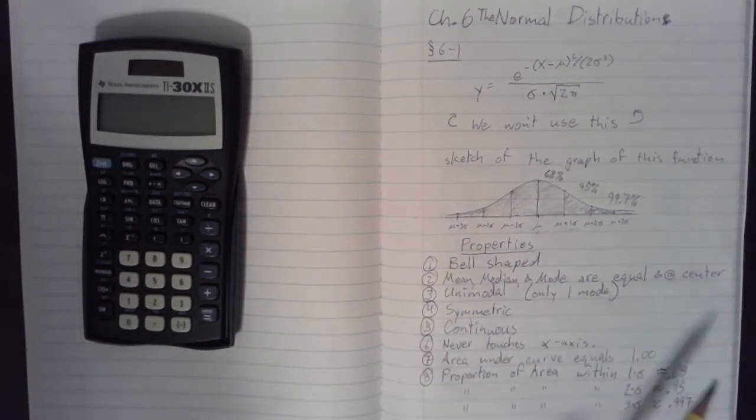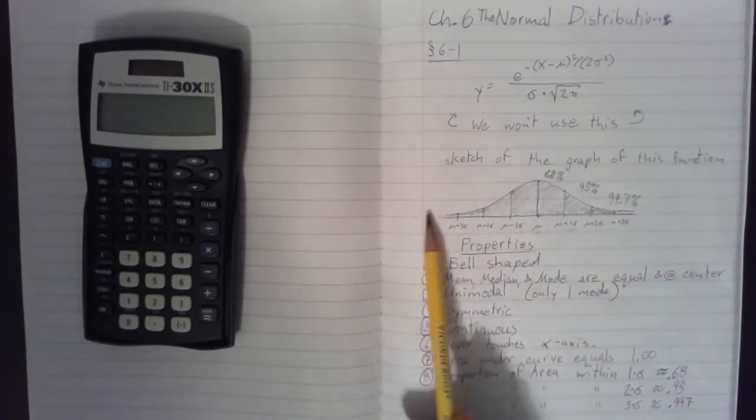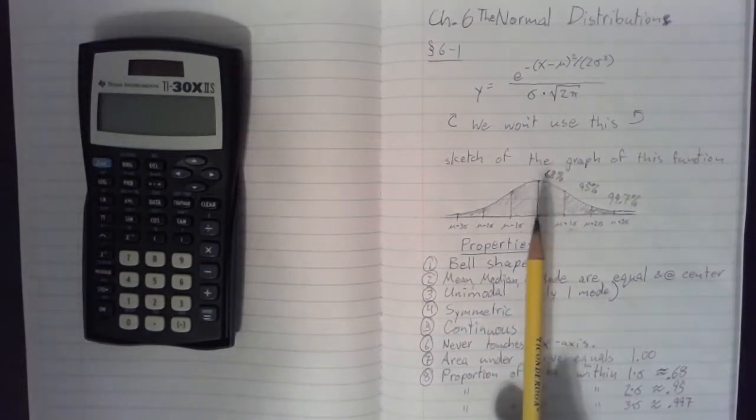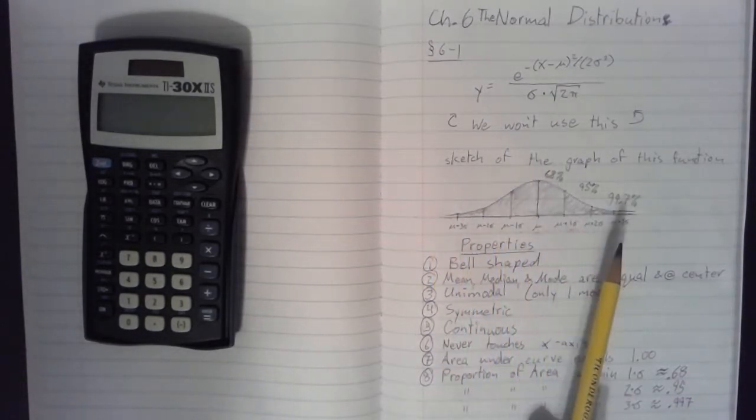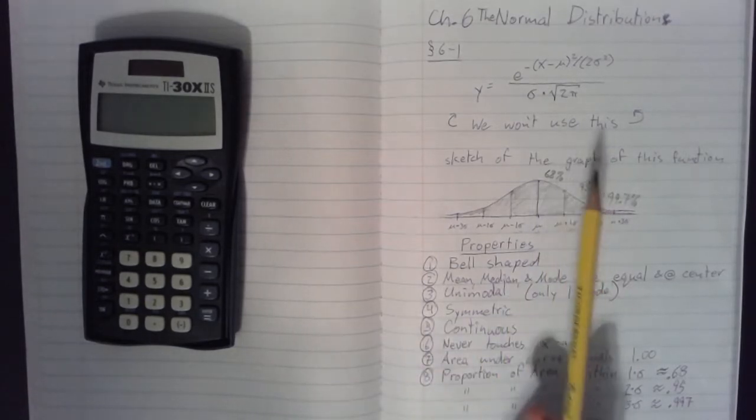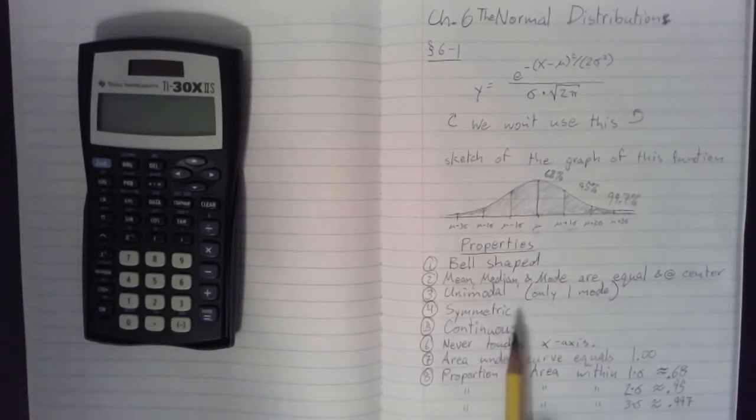Number six, it never touches the x-axis. So, our x-axis is the horizontal line that is the bottom of the graph. And our graph, the curve, the top of this curve, never reaches the x-axis, meaning the function's value is never equal to zero.